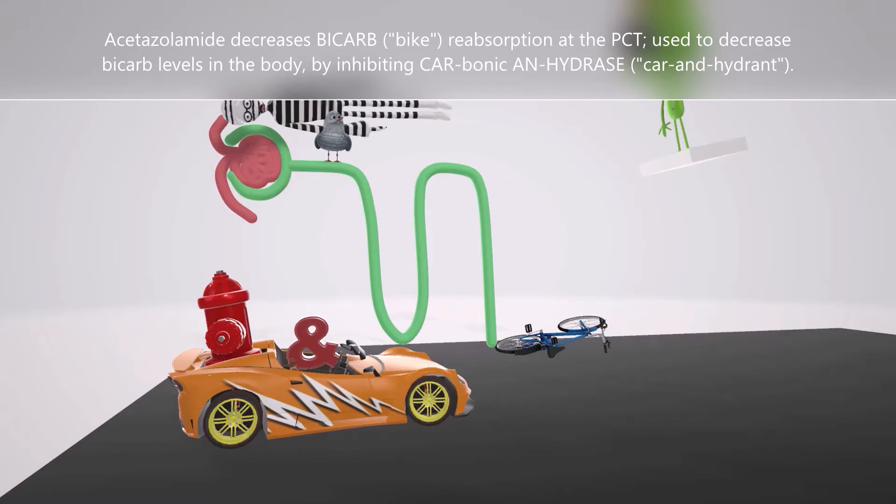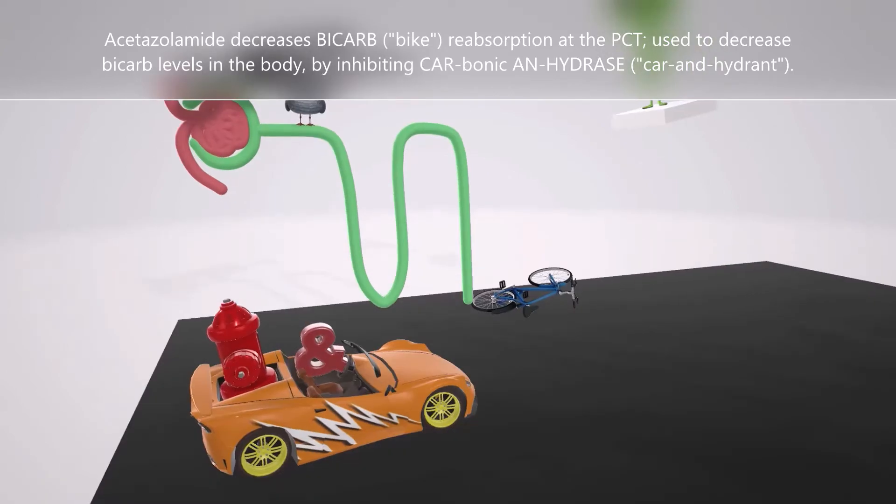Here we have the seagull who seemed so innocent before actually exploding the car. This helps us remember that acetazolamide inhibits carbonic anhydrase, and that's how it causes bicarb to end up in the urine.